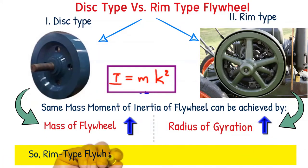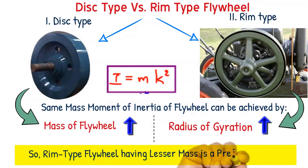Can you guess which one would be better? As a rule of thumb in mechanical design, component having lesser mass is always preferred. So rim type flywheel having lesser mass is a preferred design.